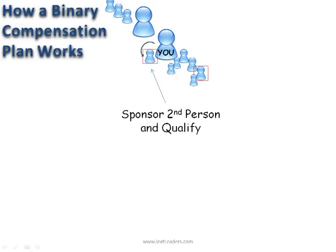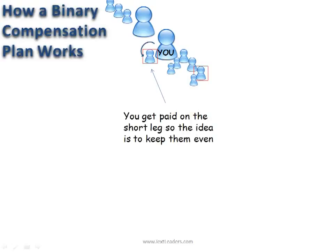So when you go ahead and sponsor your second person, now you're qualified to earn on a binary compensation plan. Because remember you get paid on the short leg. So you want to try to keep these even at all times.